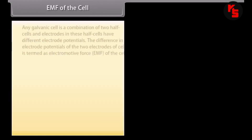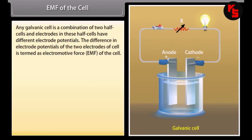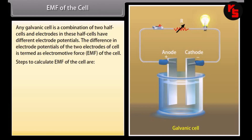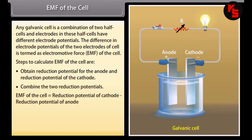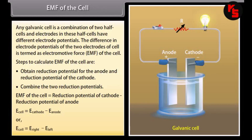EMF of the cell. Any galvanic cell is a combination of two half-cells and electrodes, which have different electrode potentials. The difference in electrode potentials of the two electrodes of the cell is termed the electromotive force (EMF) of the cell. Steps to calculate EMF: obtain the reduction potential for both the anode and cathode, then combine them. EMF of the cell = Reduction potential of cathode − Reduction potential of anode, i.e., E_cell = E_cathode − E_anode, or E_cell = E_right − E_left.